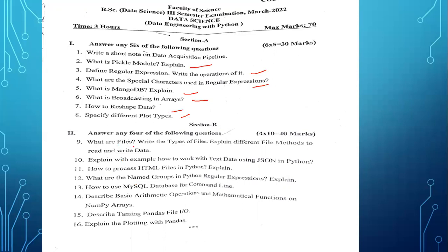Further from the previous year paper: write about file types, explain different file methods to read and write data. Explain with example how to work with text data using JSON in Python, and XML. How to process HTML files in Python. What are named groups in Python regular expressions? How to use a MySQL database — all covered. Each unit has two questions in the exam.